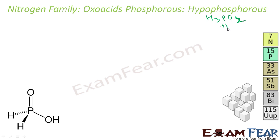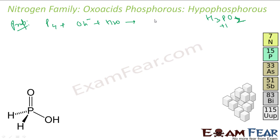Hypophosphorus acid is also called phosphinic acid. To prepare this, you take white phosphorus, add any alkali and some water. You get H2PO2⁻ and PH3.